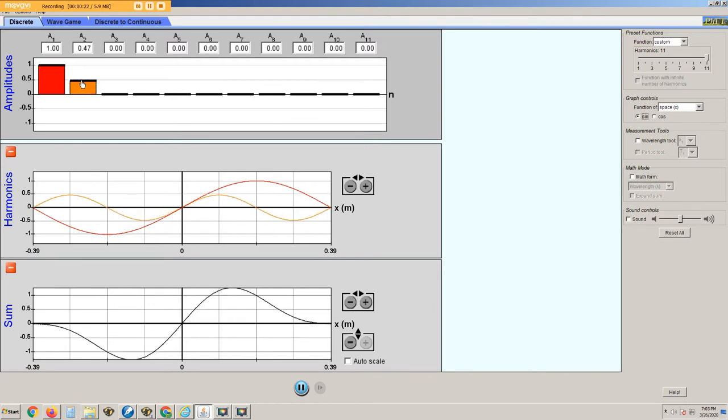For the orange wave, two full wavelengths fit across the box. The orange wave is represented by sine of 2x and the multiplier at the top is plus 0.47.